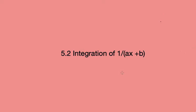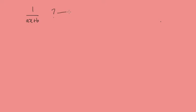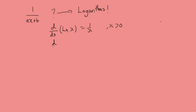Today we're going to be learning about how to integrate functions of this form. Because integration is the opposite of differentiation, when we see a function of the form 1 over ax plus b, we start to think logarithms. Previously we found out that when we differentiate the log of x, we get 1 over x for x greater than 0. The integral of d/dx of log(ax + b) is equal to a/(ax + b) where ax + b is greater than 0.